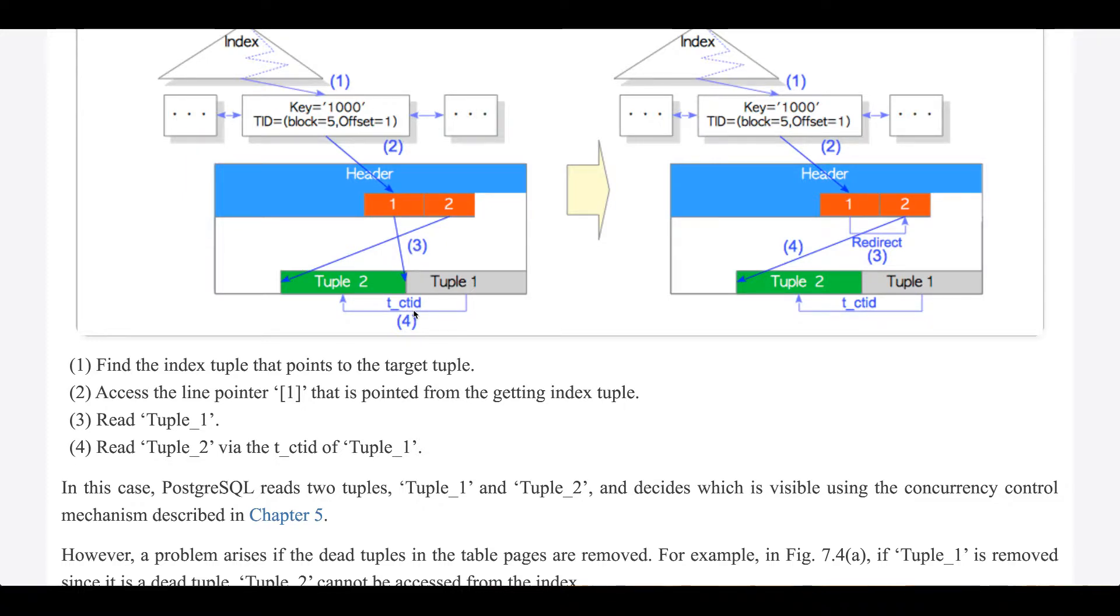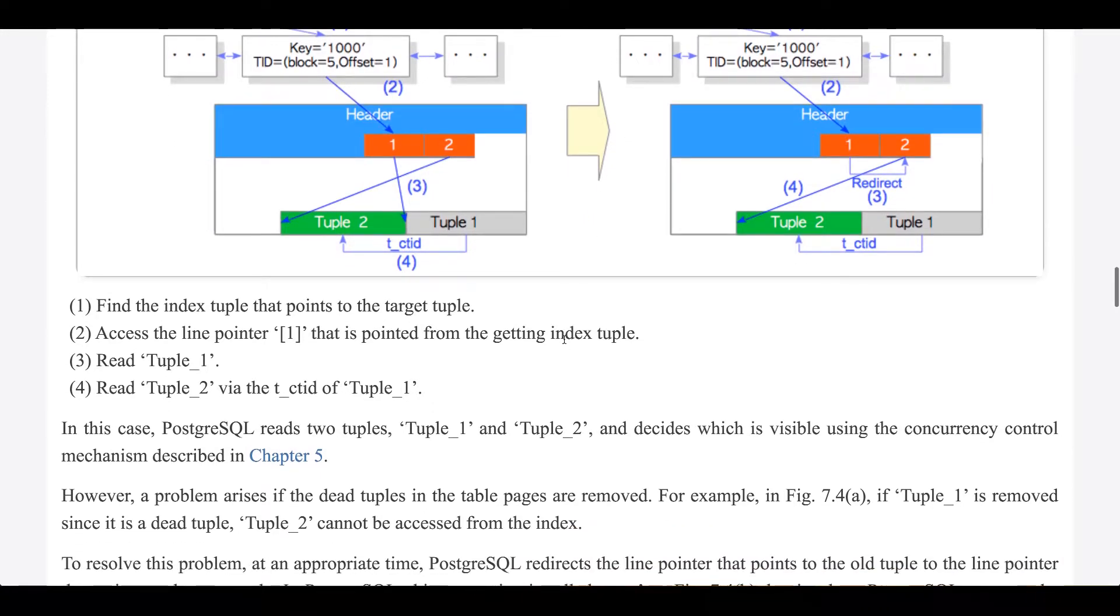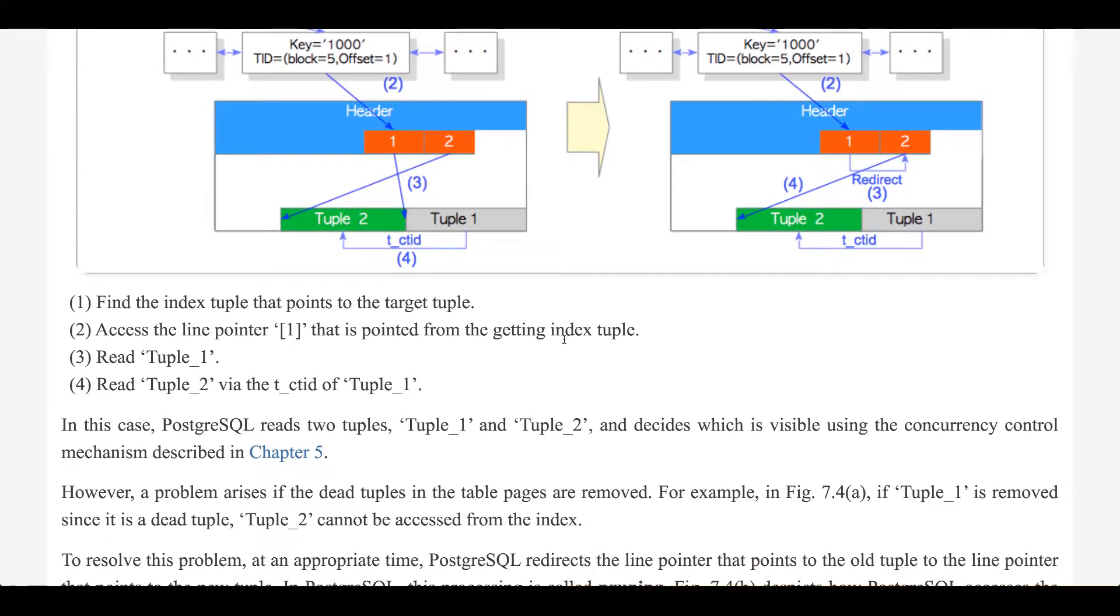In this case, Postgres reads two tuples, tuple 1 and tuple 2, and decides which is visible using the concurrency control mechanism described in Chapter 5.